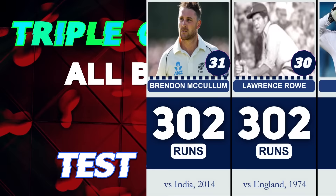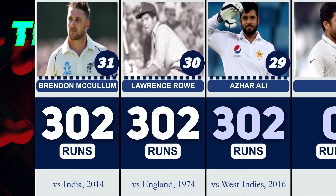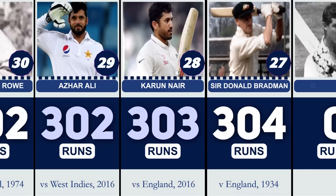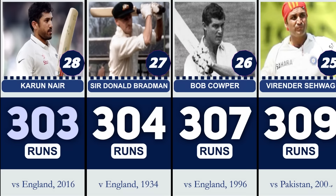Number 31: Brandon McCullum, 302 runs vs. India. Number 30: Lawrence Lowe, 302 runs vs. England. Number 29: Azhar Ali, 302 not out vs. West Indies. Number 28: Karun Noyer, 303 not out vs. England. Number 27: Donald Bradman, 304 vs. England. Number 26: Bob Coofer, 307 vs. England.